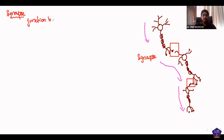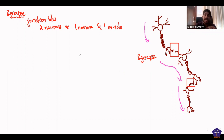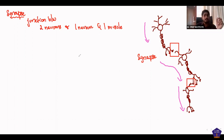A synapse is the junction between two neurons, or between one neuron and one muscle. The neurons will be connected at the synapse, which is the terminal button region.